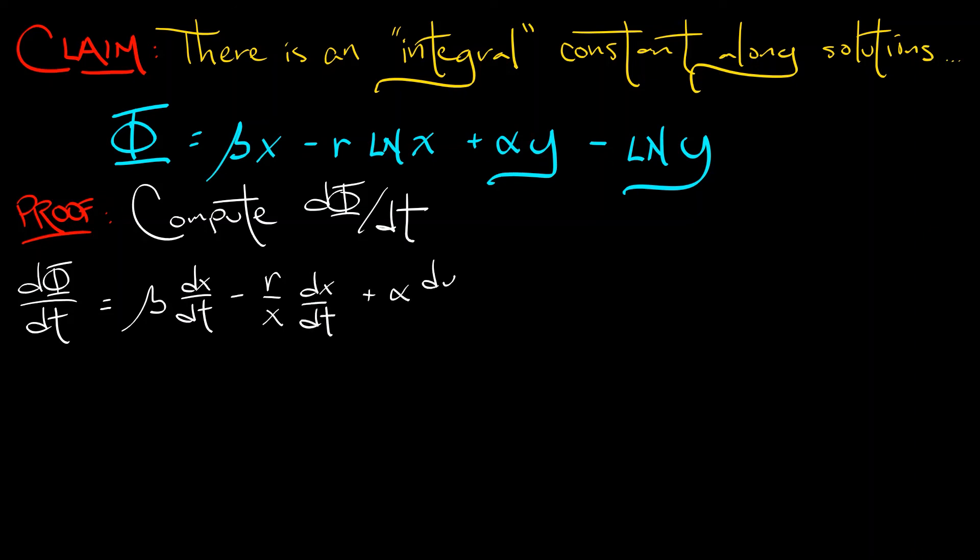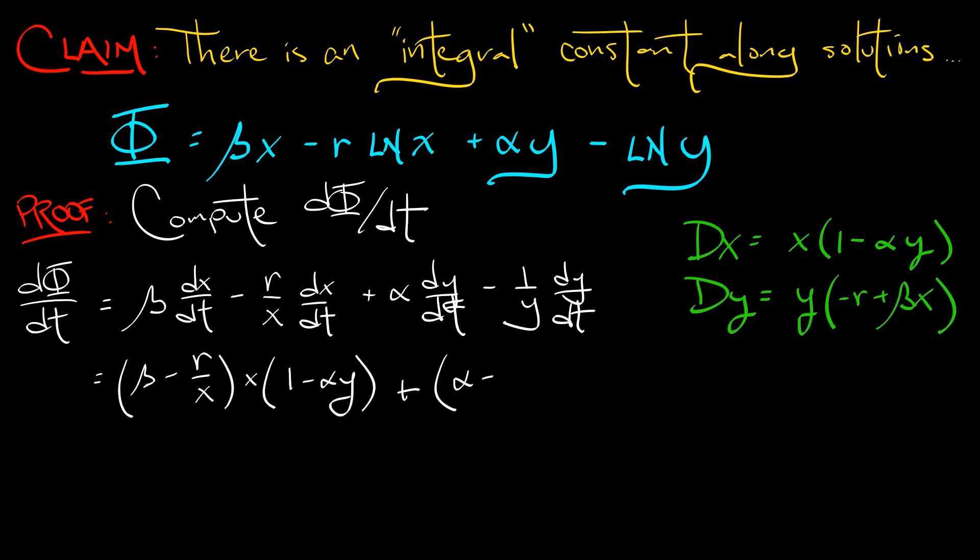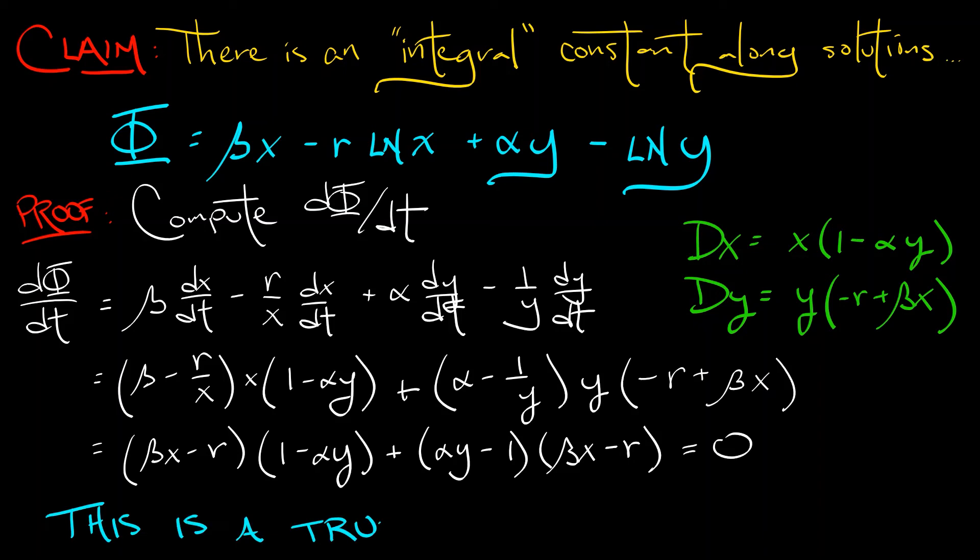Remembering what dx/dt and dy/dt are and plugging those into the equation with algebraic manipulation, we get a final answer that clearly turns out to be zero. You can check this. This means the level sets of Φ are precisely the orbits of this system, the curves that are traced out. That's going to imply, by checking what the level sets are, that we've got a true center. That's what we were trying to show.